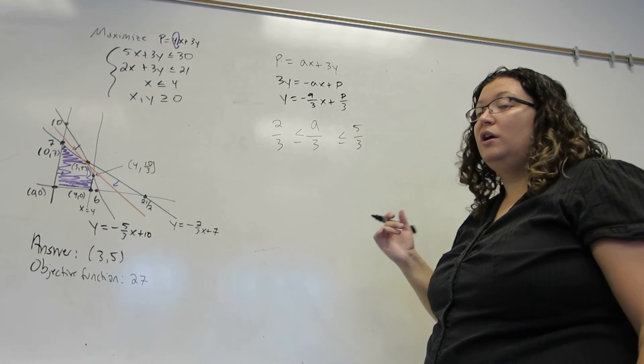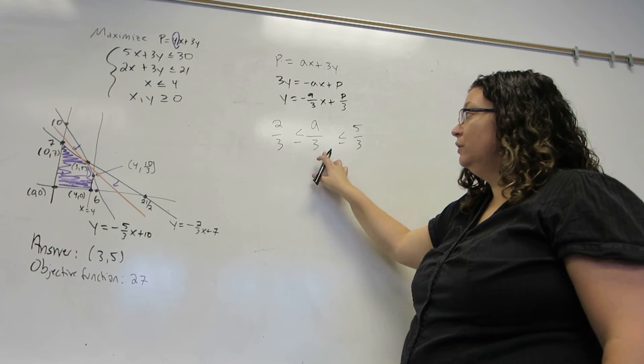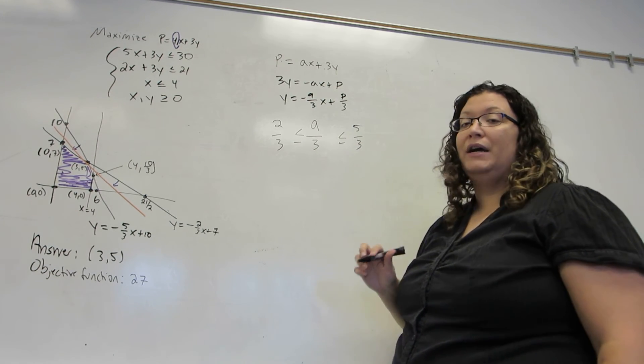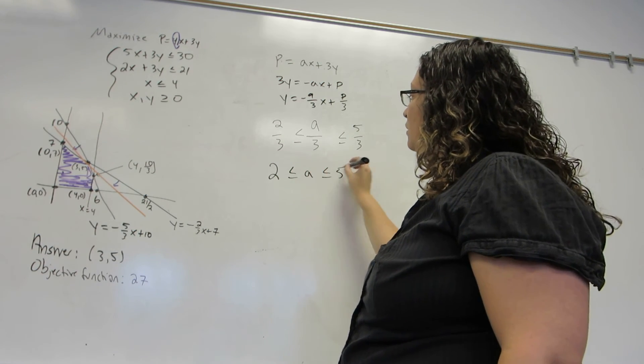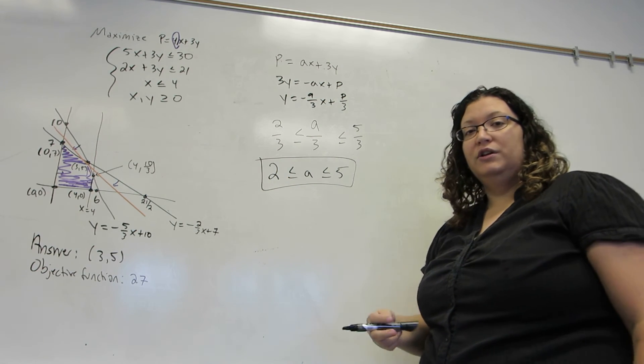Now in order to solve this we need to get a alone, so I'm going to multiply through by the number 3 and I'm going to get a range for a. That is the answer to the question.